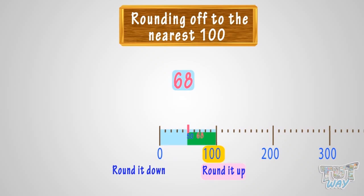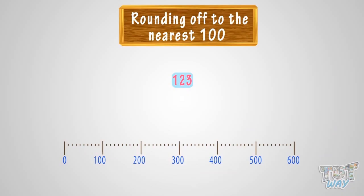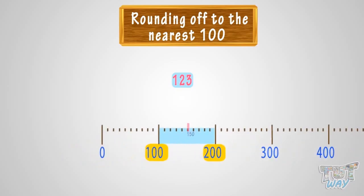Now let's take another example: 123. We have to round 123 to the nearest 100. Let's see where we can fit 123 on this number line — it is somewhere between 100 and 200. Here, 123 is before the 50 mark, so we will round it down to 100.